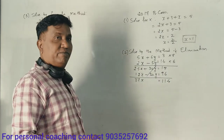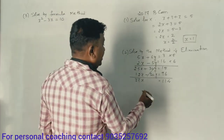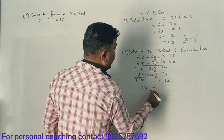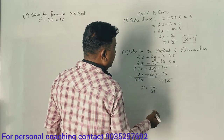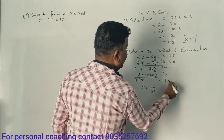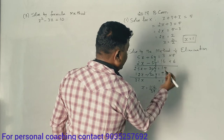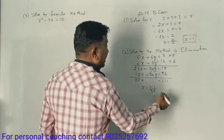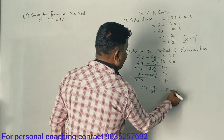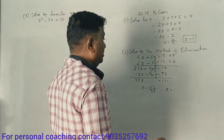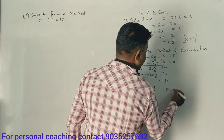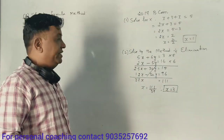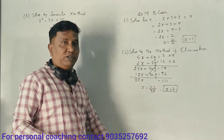The result is 149. So x is equal to 114 divided by 111 — sorry — that gives x equal to 3. So the x value is 3.